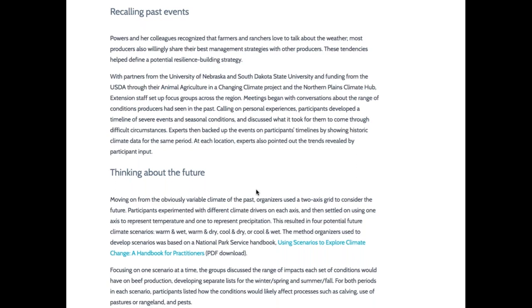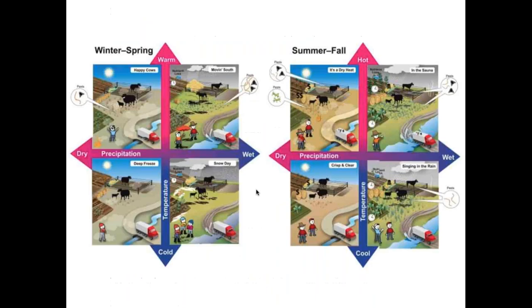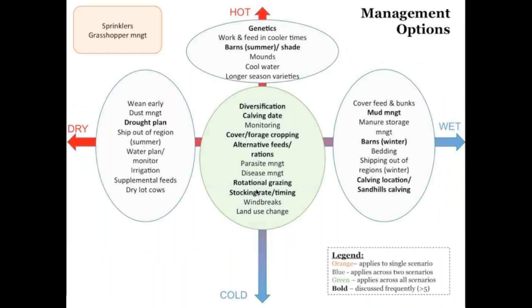They used a method from the National Park Service handbook that uses the development of scenarios to have these conversations. One of the things they did in the course of scenario building was develop artifacts that help people think about their options. This slide shows what was developed in the process of conversation building — it helps beef producers identify their options in different scenarios in winter and spring: warm-wet, warm-dry, cold-wet weather, et cetera. It's really an interesting tool that proved quite helpful. The next slide shows the actual options these folks could use to deal with real operational management issues when these different scenarios came up.